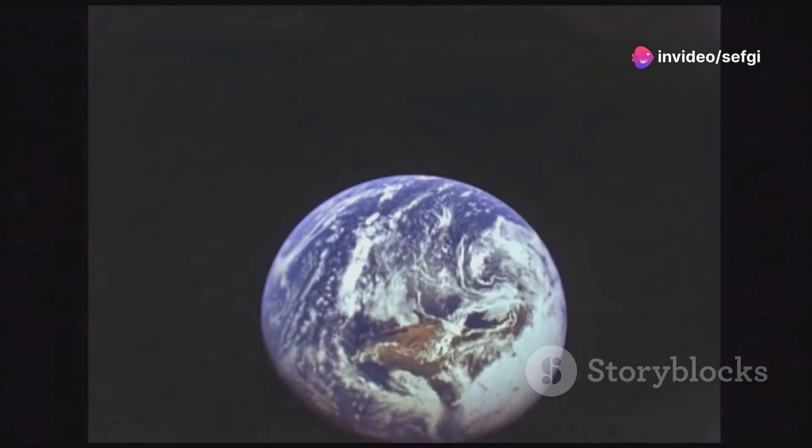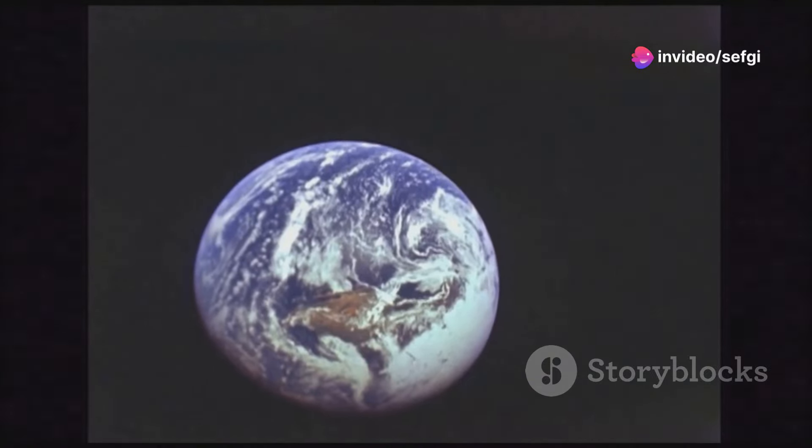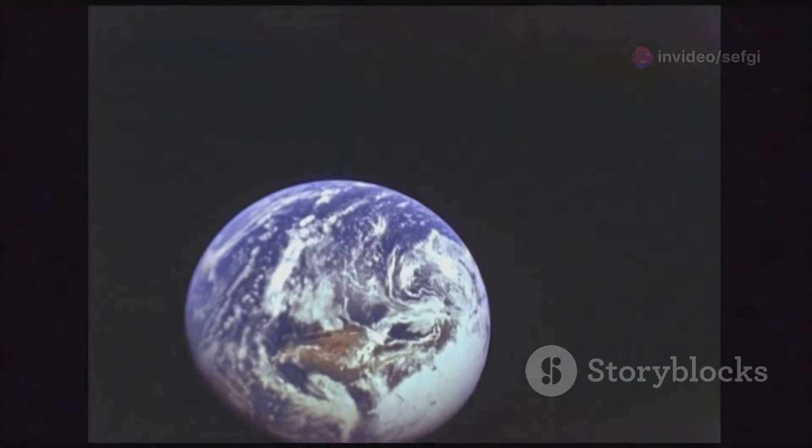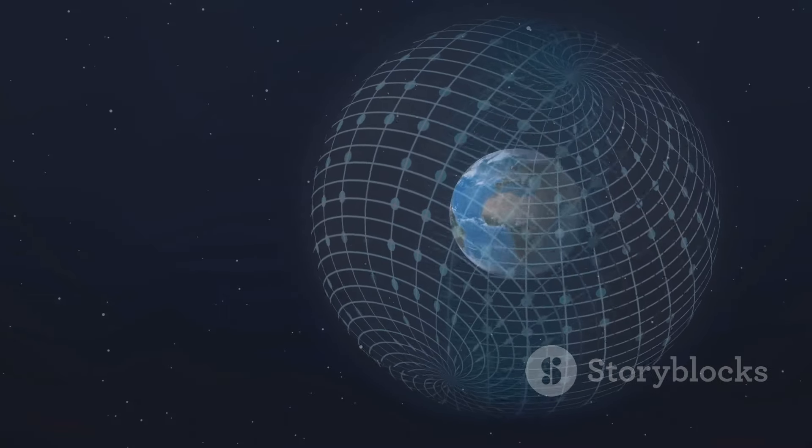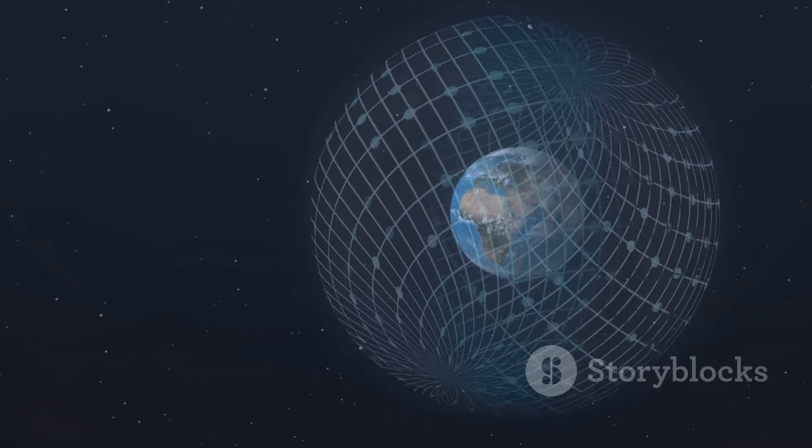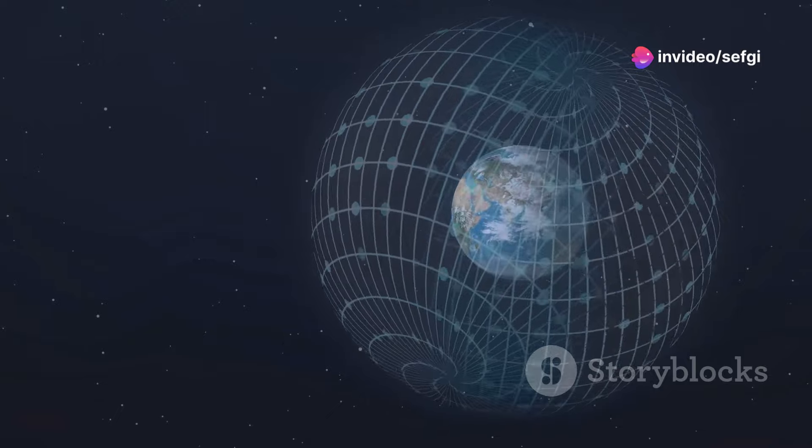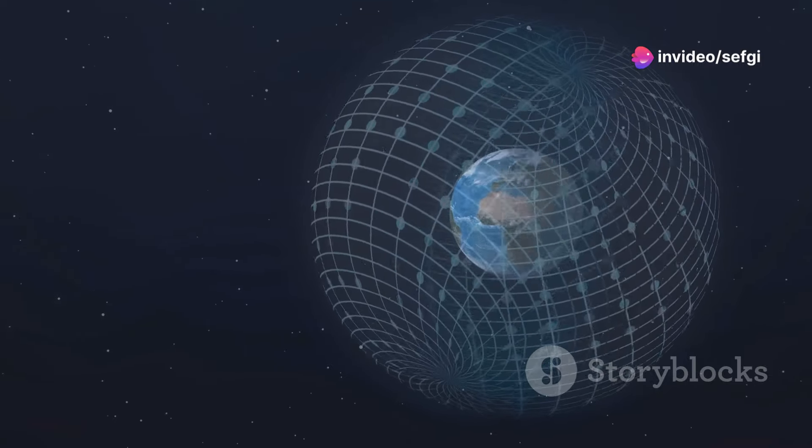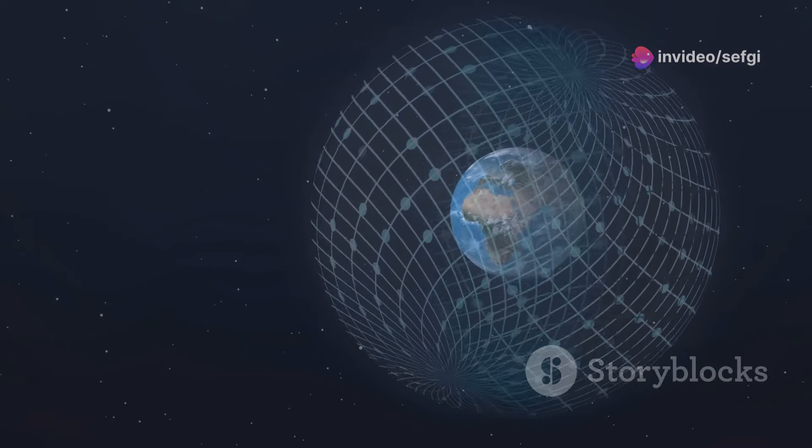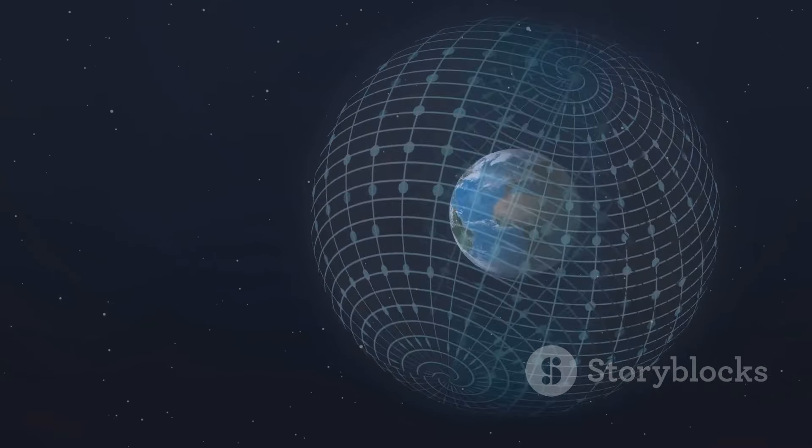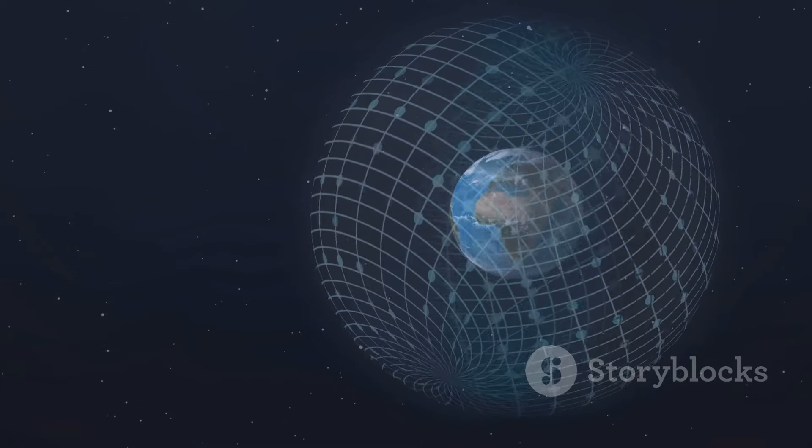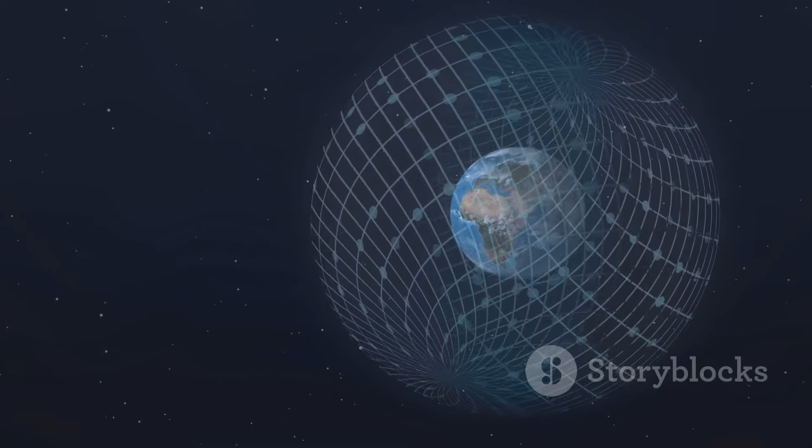Our magnetic field plays a crucial role in protecting us, acting as a buffer against the solar winds. These are streams of charged particles hurled from the sun which could potentially strip away our atmosphere and make life as we know it impossible. But thanks to this ever-changing magnetic field, we're safe and sound. It's fascinating, isn't it? How even the things we can't see are constantly at work, ensuring our survival on this beautiful planet.